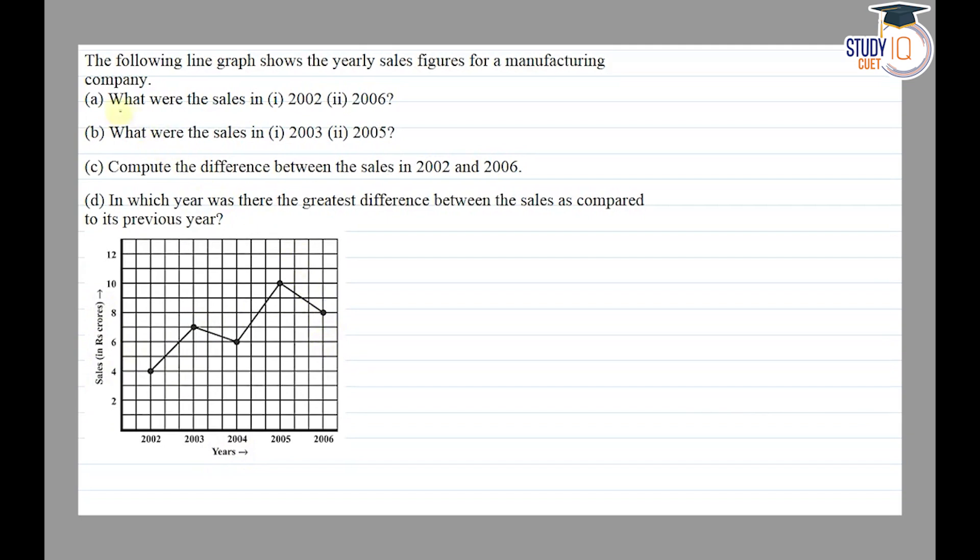Part A asks what were the sales in 2002 and 2006. First, for 2002, we will see this point and find the sales on the y-axis, so y-axis matches to 4, so it's 4 crores. Then for 2006, we match this point to y-axis, so this is 8 crores.